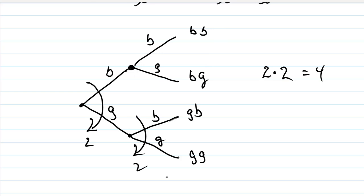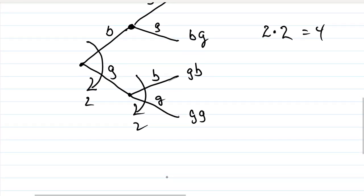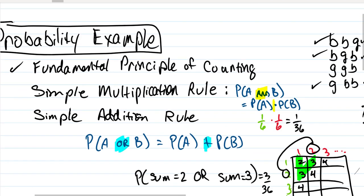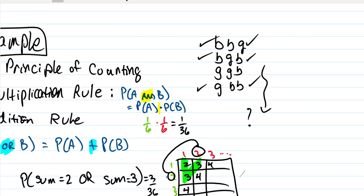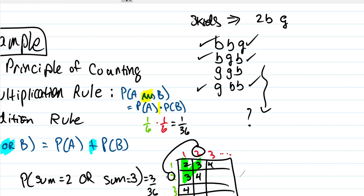The fundamental principle of counting is a tool used to help us count. Now, going back to answer our original question — given that this couple is going to have three kids — what's the probability of having two boys and one girl? For each child there are two options, so there are 2 × 2 × 2 = 8 total outcomes for having three kids.